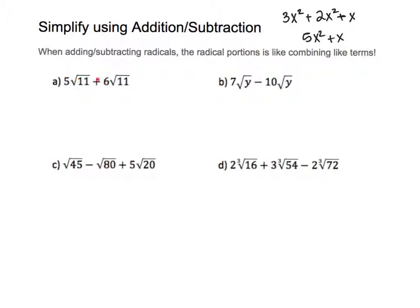For the first example, in order to combine two radical terms, they must have the same root type and the same number underneath the root. Both are square roots with 11 underneath, so they are like terms — combine 5 and 6 by adding to get 11√11. For the second example, both have square root of y, so subtract: 7 minus 10 gives negative 3, giving negative 3√y.